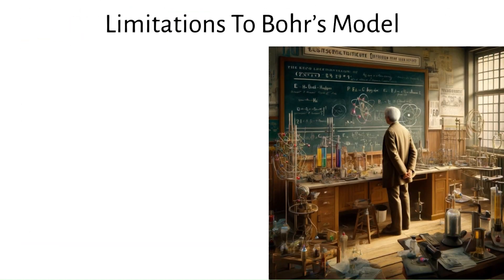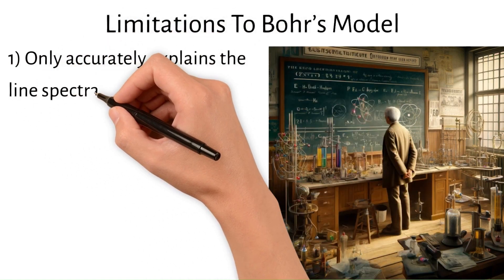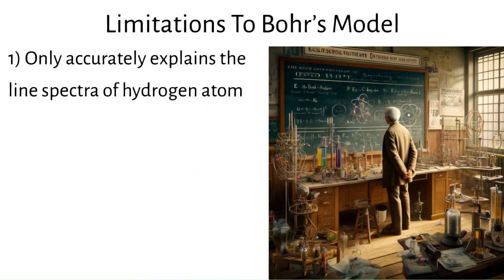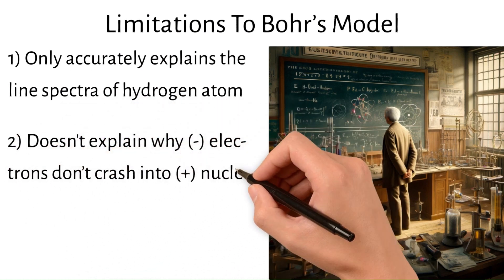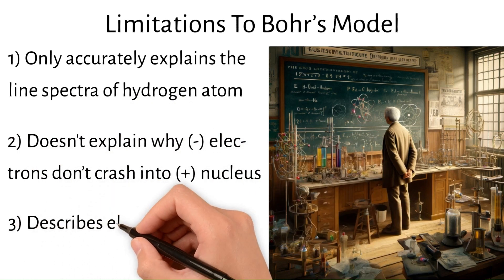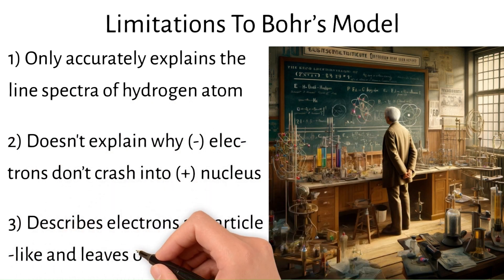However, there are some key limitations to Bohr's model. First, it only accurately explains the line spectra of the hydrogen atom, with the explanation of other atoms not fitting so well. Second, it doesn't explain why the negatively charged electrons don't crash into the positively charged nucleus. Lastly, it describes electrons as particle-like and leaves out their wave-like nature.